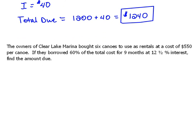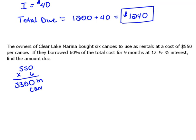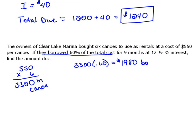Last one in this section — this one's very interesting. The owners of Clear Lake Marina bought six canoes to use as rentals at a cost of $550 per canoe. If they borrow 60% of the total cost for nine months at 12.5% interest, find the amount due. First of all, they're buying these canoes — $550 for six of them — so the total price of those canoes is going to be $3,300. Now it says they're going to borrow 60% of that money, so we need to figure out what 60% of $3,300 is. We multiply by .60, which tells us they're going to have to borrow $1,980.